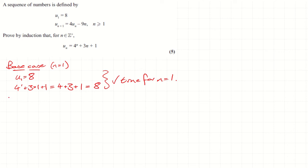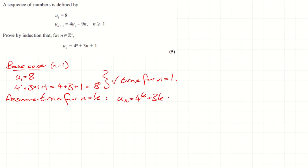Next, what is my assumption? I'm going to assume true for n equals k, for some integer k. So what am I assuming? I'm assuming that uₖ is this — I'm just writing it out again with a k in there, but it's important for my logic.